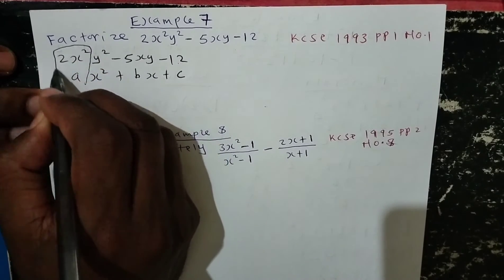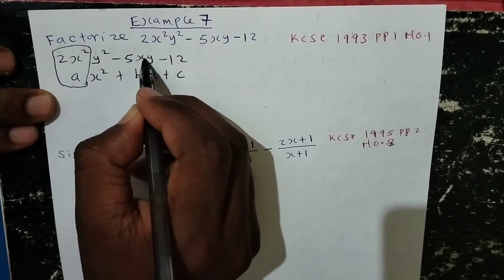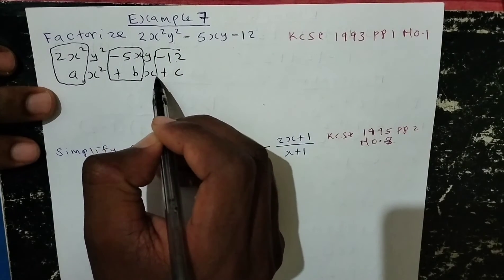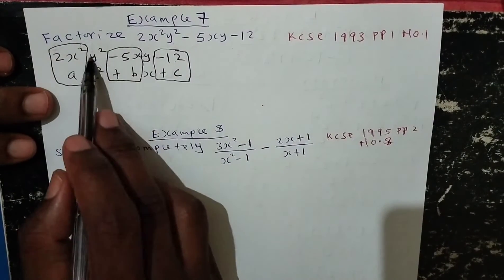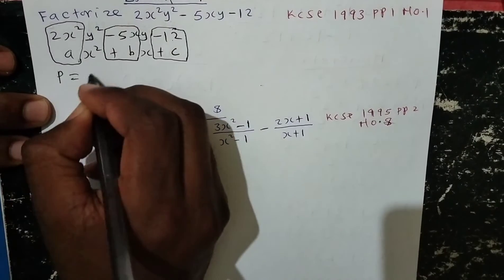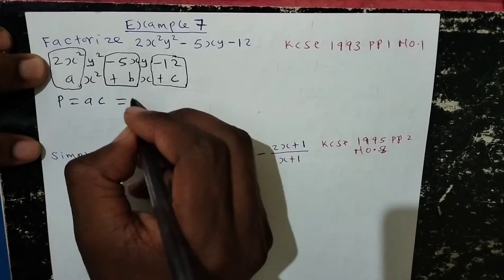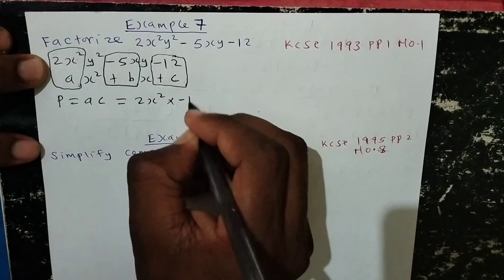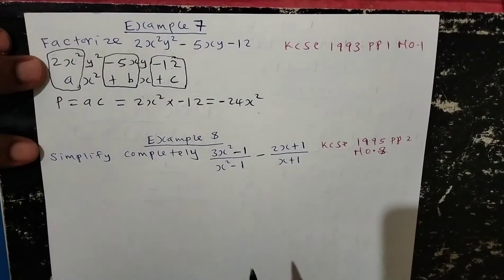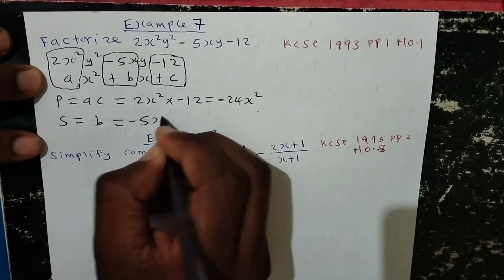This is in the form ax squared plus bx plus c. Choosing y as my variable, the value of a is 2x squared. The value of b is the coefficient of y, which is negative 5x. The value of c is the constant negative 12. The product is ac, which is 2x squared times negative 12, giving negative 24x squared. The sum is the value of b, which is negative 5x.